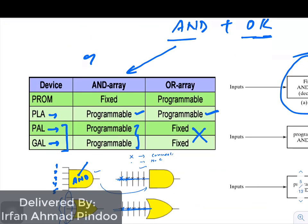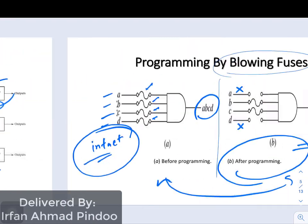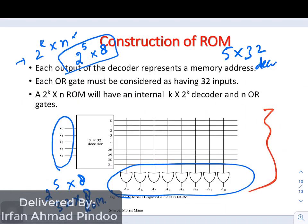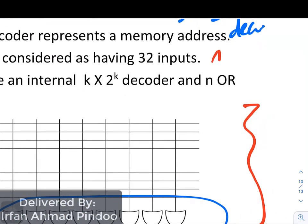Now if you will revise this slide that I had discussed with you, you can see here if we are talking about the PROM, the AND array is fixed and OR array is programmable. Now this thing must be in your mind while we are studying the PROM. So it means that in this particular design, if we are talking about the PROM, AND would be fixed. This array of OR gates would be programmable.